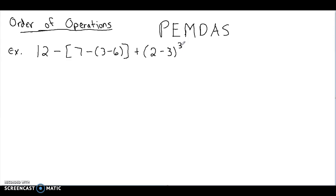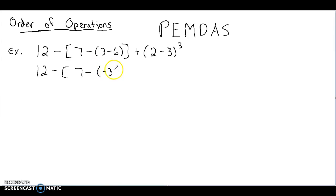When we look at this, we need to figure out what to do first. We do have two sets of parentheses to take care of, so I'm going to do all the parentheses first. We have 12 minus, 7 minus, and we do 3 minus 6, which is negative 3. And while we're at it, let's take care of the other parentheses: 2 minus 3 gives us negative 1, so we're going to have negative 1 to the third.